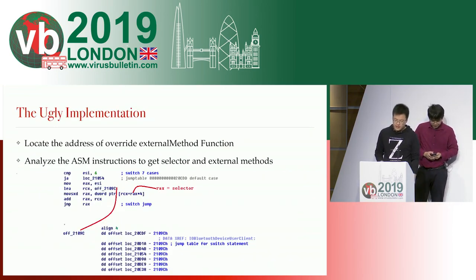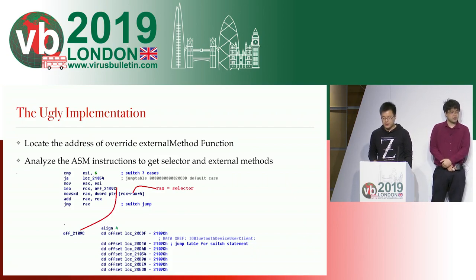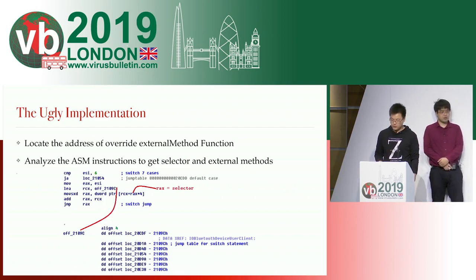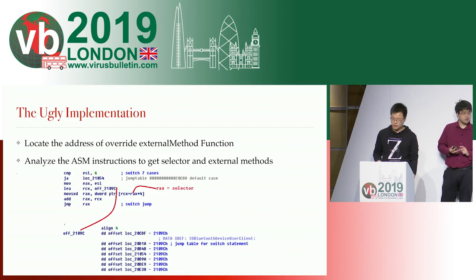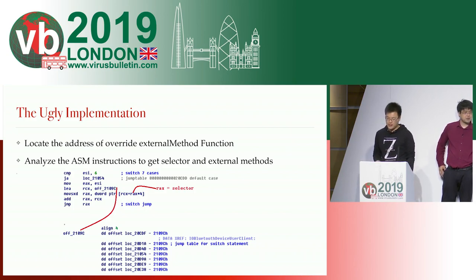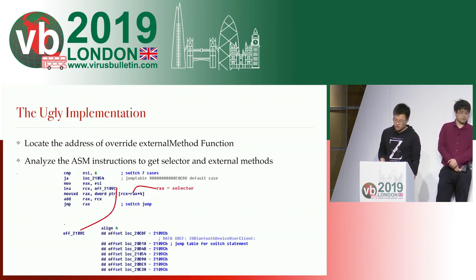For implementations where drivers override the external method function and complete the method call by themselves, we call it ugly implementation. This kind of driver usually uses if-else or switch-case to control external method calls according to different selectors. For this, we also look at the address of the override external method function first, and then analyze the assembly instructions to get the selectors and corresponding methods. Here is an example using a switch-case. Different from standard C++, Apple adds a jump table for each switch-case, which helps us analyze different selector paths.